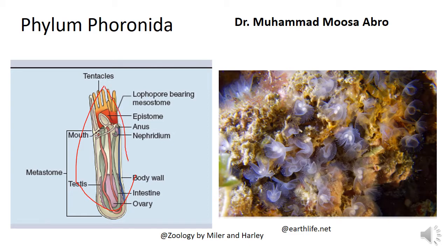Simply, these are horseshoe animals or worm-type organisms. This is why we call them Phoronida, and this is an internal image.